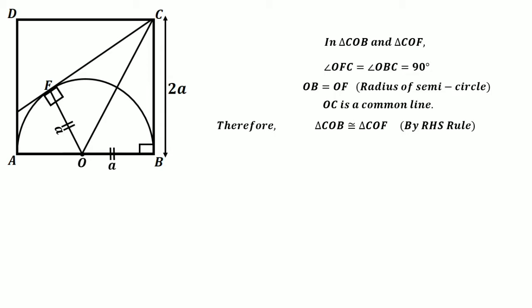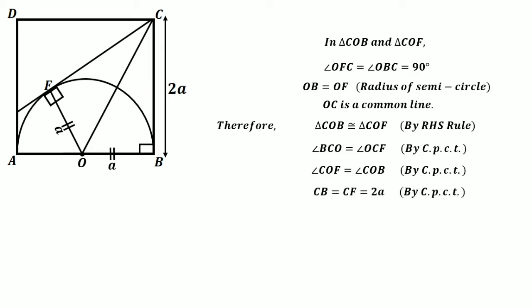So angle BCO is equal to angle OCF by CPCT, and angle COF is equal to angle COB by CPCT. Line CB is equal to line CF which is equal to 2A by CPCT. Now let angle BCO equal theta, so that angle FCO is also equal to theta.